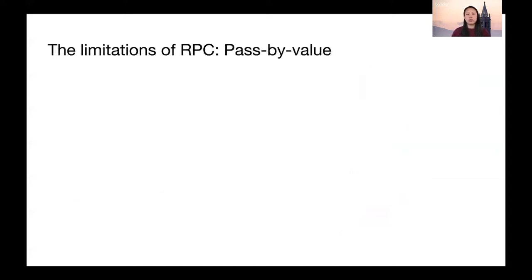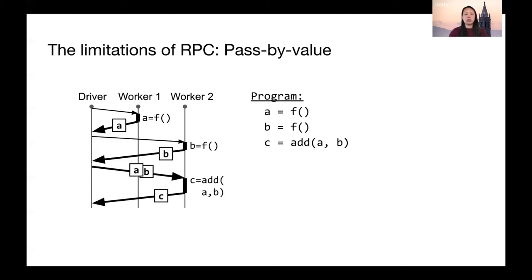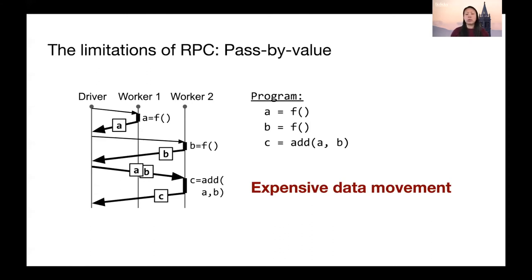But as you probably guess from the title of this talk, RPC has its limitations too. The one we'll be focusing on is the fact that all data is passed by value, which can get expensive when data is large. The client will first call f on worker1 and then call f on worker2. In both cases, the return values a and b get sent back to the driver, and the driver then has to copy these values back to worker2 when calling add. When RPC is used for large values, the application might have to deal with expensive data movement.